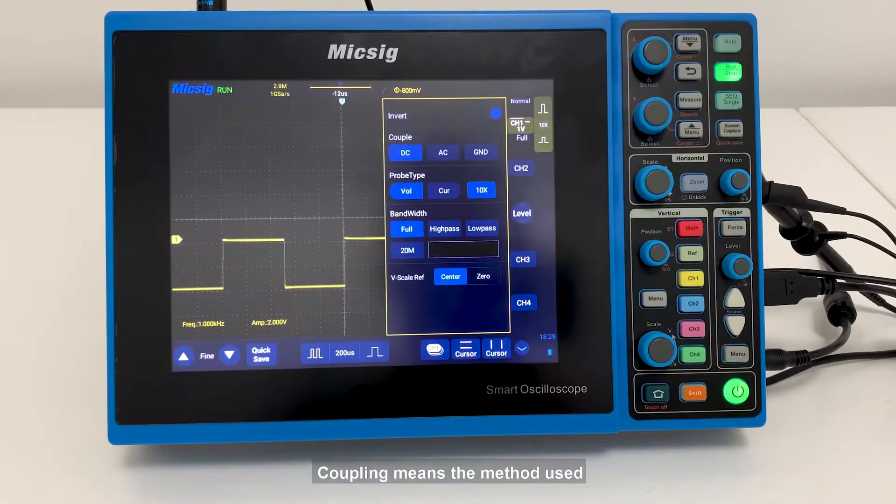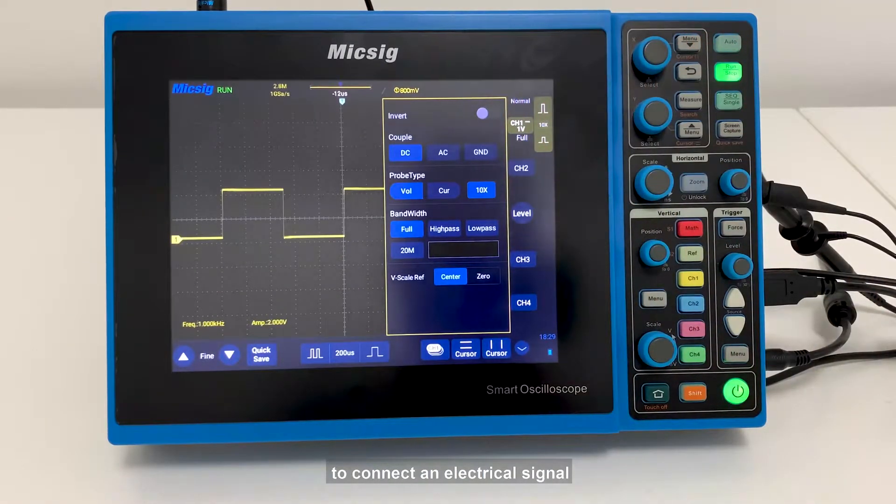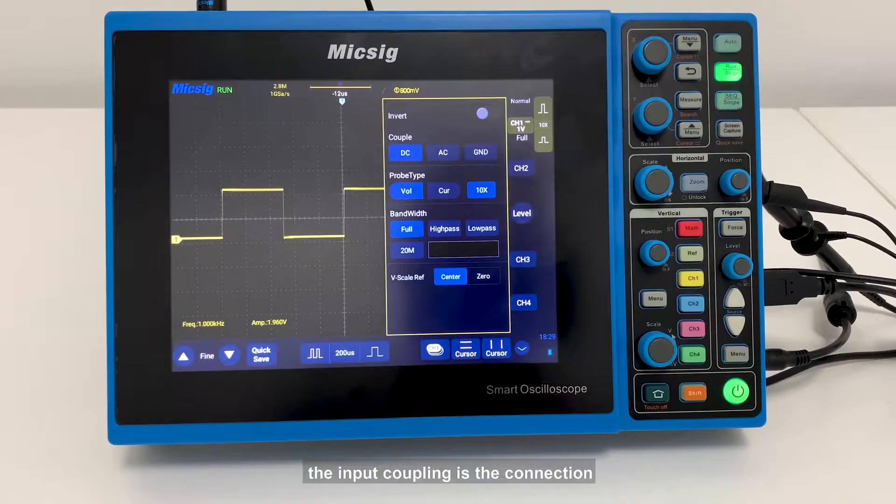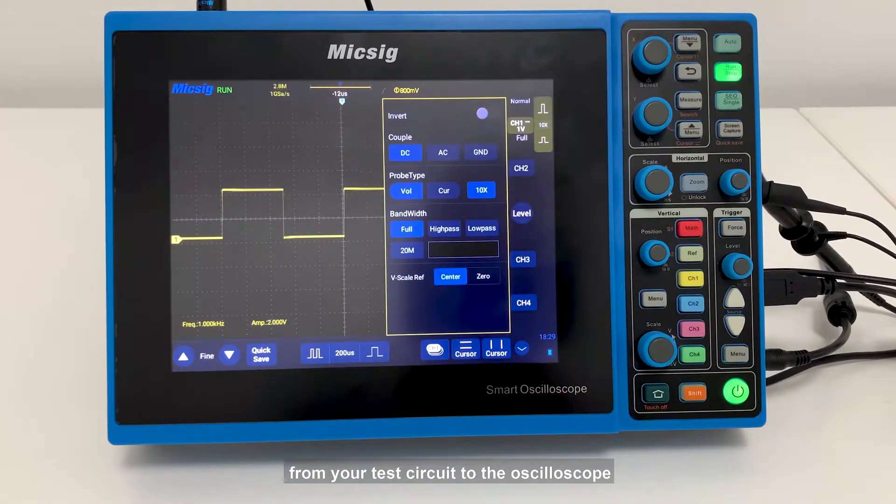Coupling means the method used to connect an electrical signal from one circuit to another. In this case, the input coupling is the connection from your test circuit to the oscilloscope.